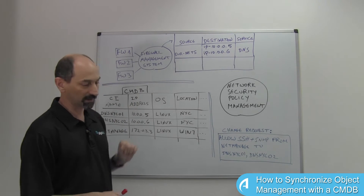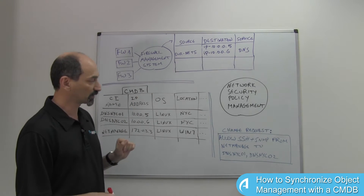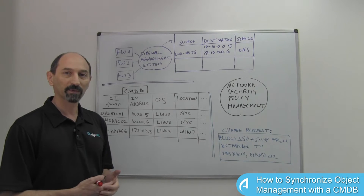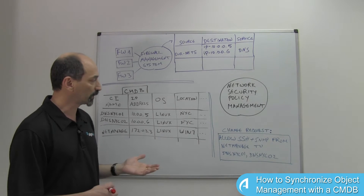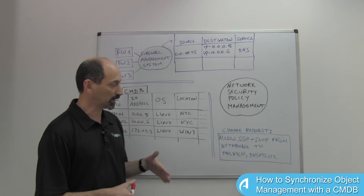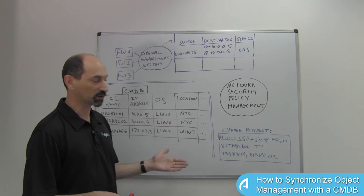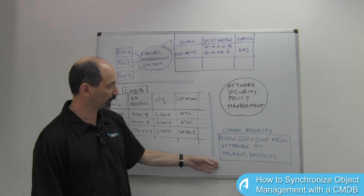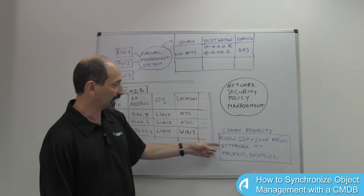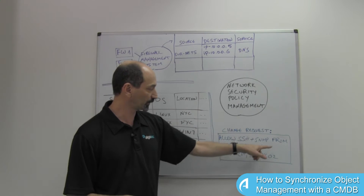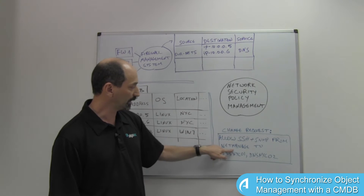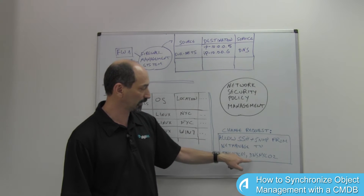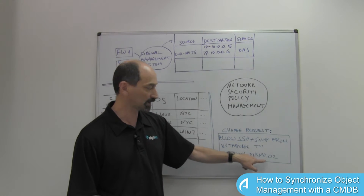To make this discrepancy more difficult, think about what happens when there is a change request — somebody needs to make a change. For instance, a change request might look like this, shown in blue: allow SSH and SNMP from NetManage to DNSNYC01 and DNSNYC02.